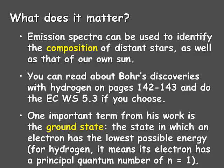You can read about Bohr's discoveries with hydrogen on pages 142 to 143, and do the extra credit worksheet 5.3 if you choose. You now have the knowledge to do that worksheet, and it's an excellent way of getting used to using the equation introduced with Planck's constant — and a great opportunity for extra credit points. One important term from Bohr's work is the ground state, which is the state in which an electron has the lowest possible energy. For hydrogen, it means its electron has a principal quantum number of one.